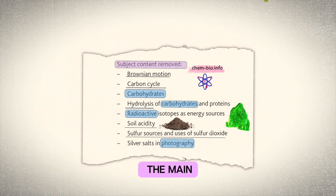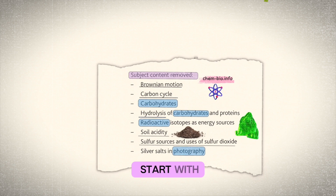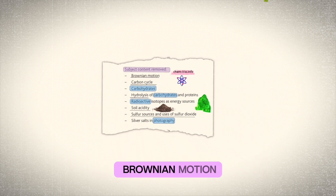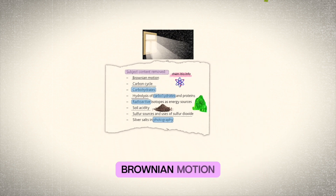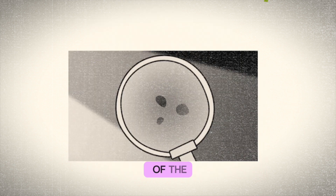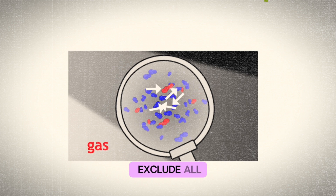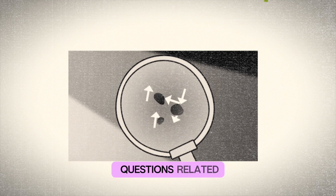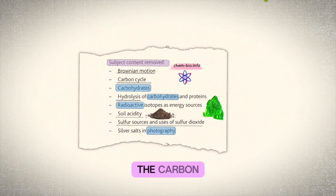Here's a list of the main changes. Let's start with Brownian motion. Brownian motion is no longer part of the syllabus, so you should exclude all questions related to it.